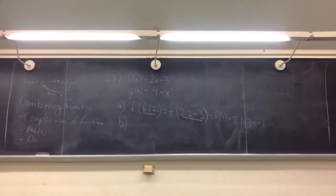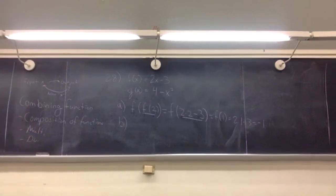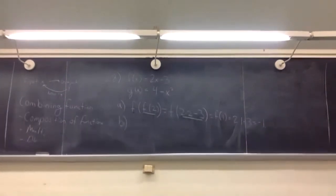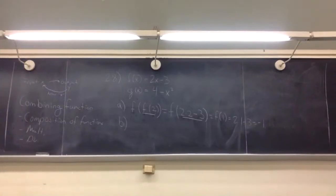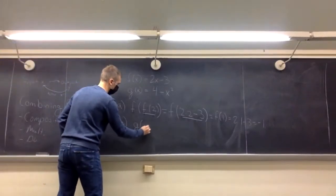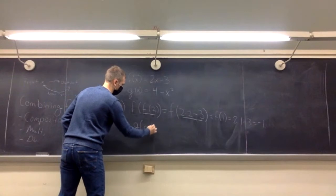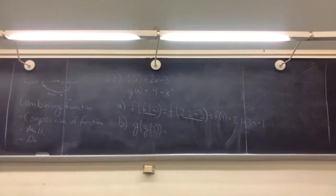Problem 28: we have f of x equals 2x minus 3 and g of x equals 2x minus 4 minus x squared. Part a asks: what is f of f of 2? This is composition — we've taken the function f as the input to f itself. Just like with arithmetic, you start on the inside and work your way out. We want f of f of 2, so first compute f of 2: plug in 2 — that's 2 times 2 minus 3, which is 4 minus 3, equals 1. Then f of 1 is 2 times 1 minus 3, which gives negative 1.